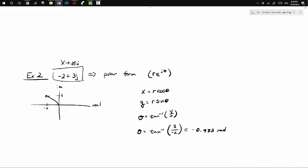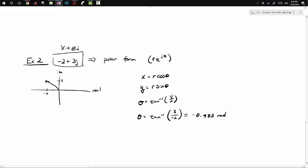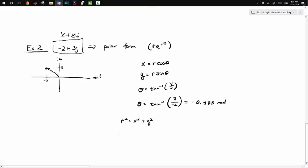Now we can find R with the equation R² = X² + Y². R will be plus or minus again. X² is (-2)² = 4, plus 3² = 9. That will be plus or minus square root of 13.